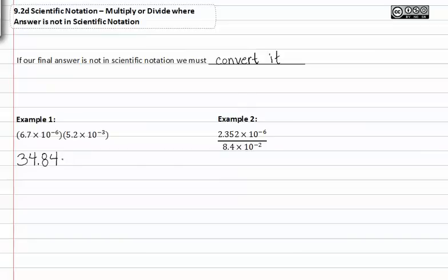When we multiply matching bases, in this case our tens, we add the exponents to get negative nine.